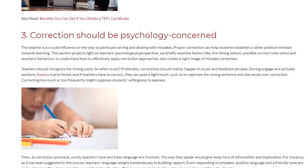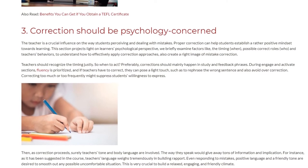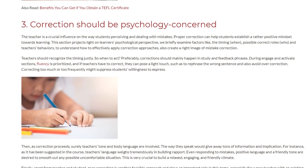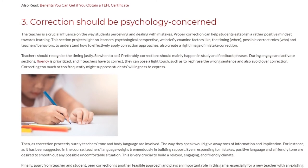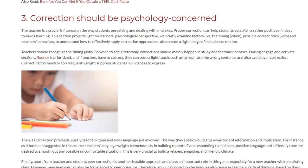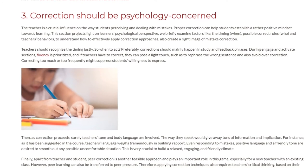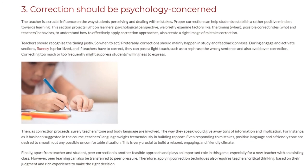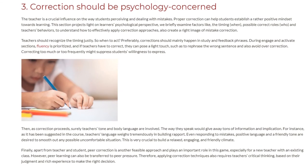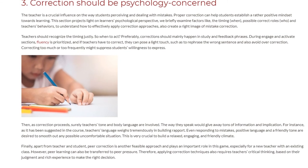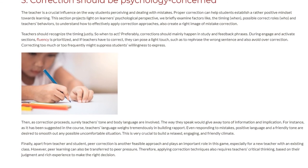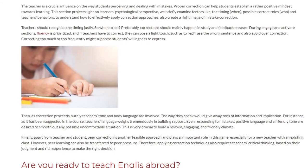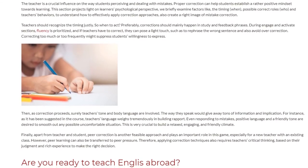Teachers should also avoid over-correction, as correcting too much or too frequently might suppress students' willingness to express themselves. As correction proceeds, teachers' tone and body language are involved. The way they speak gives away tons of information and implication. As suggested, teachers' language weighs tremendously in building rapport. Responding to mistakes with positive language and a friendly tone is desired to smooth out any possible uncomfortable situation.